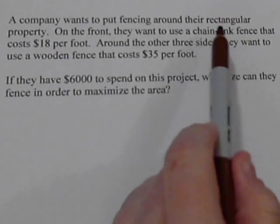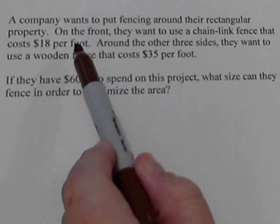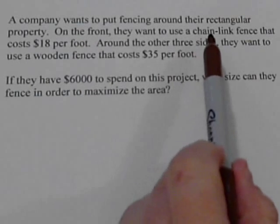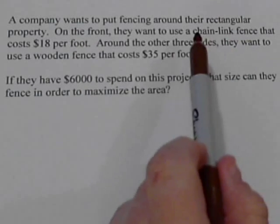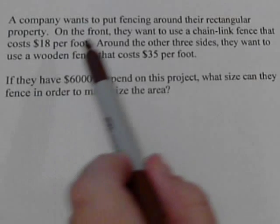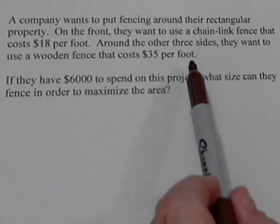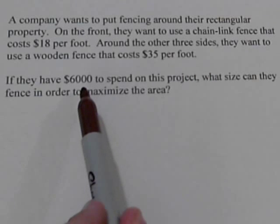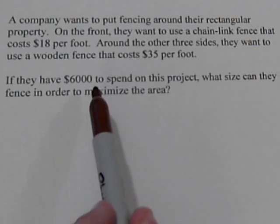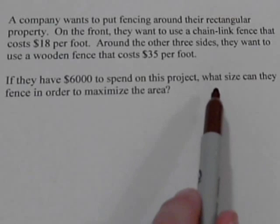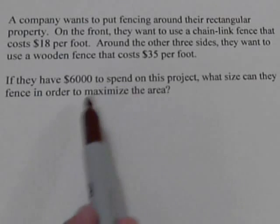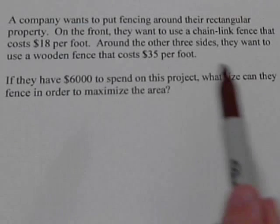A company wants to put a rectangular fence around their property, and they're going to fence it differently. Across the front, they're just going to use chain link, which is $18 a foot. And then around the other three sides, they're going to use a wooden fence, $35 a foot. And they've got $6,000 that they will be able to spend on the project. So we want to know what size can they fence in in order to maximize the area while staying under budget.